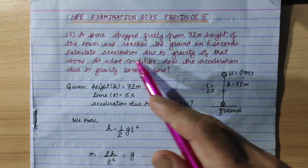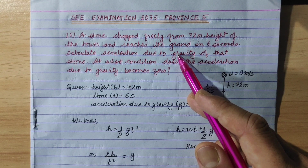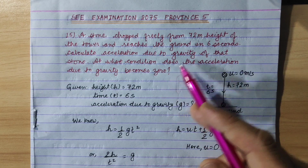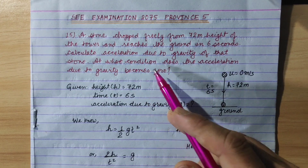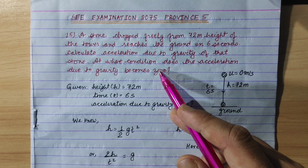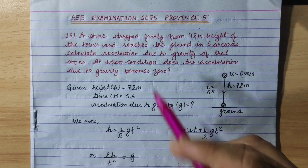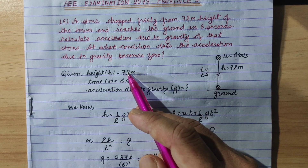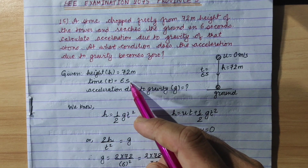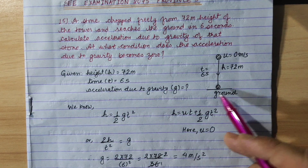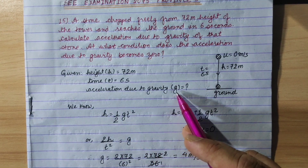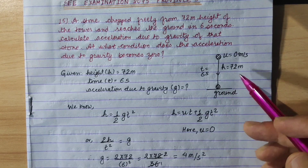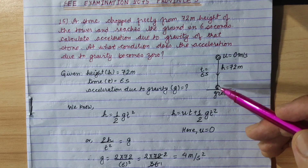The stone has the acceleration due to gravity, i.e. small g. At what condition does the acceleration due to gravity become 0? The acceleration due to gravity is 0. Now we are going to work through the numerical part.